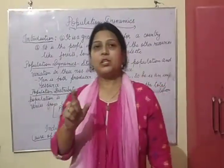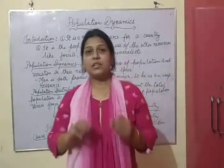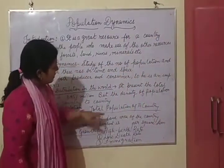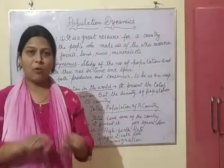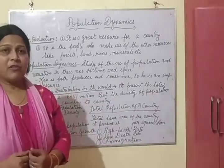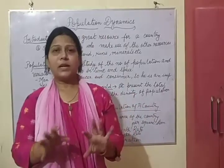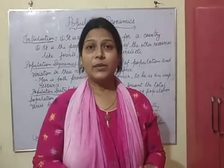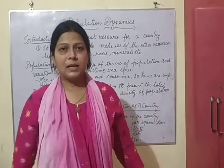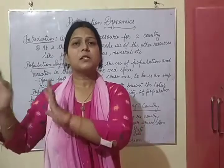Now the term population density came up. All places have different population density. Population density is equal to the total population of a country divided by the total land area of the country. The ratio between these two is known as the population density of any area. For example, according to the 2011 census, the population density of India was 382 persons per square kilometer, meaning in each square kilometer there are 382 people living in India.